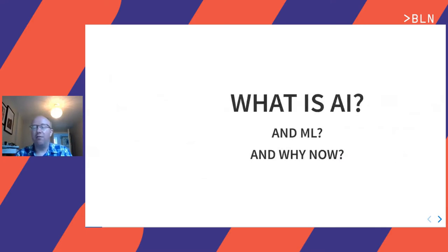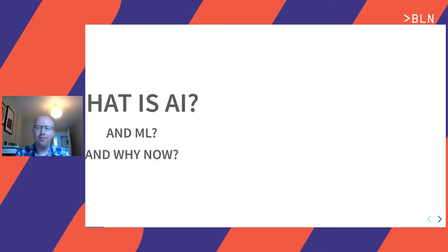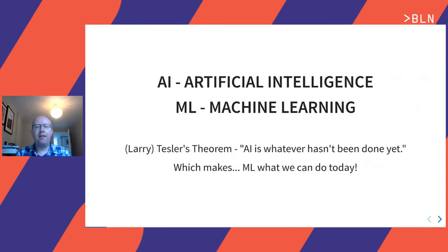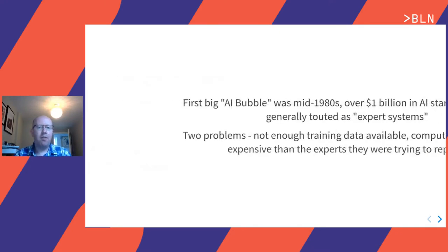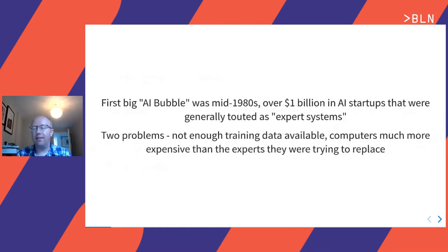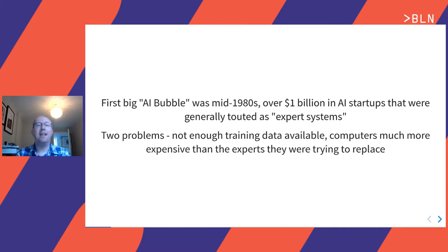What is AI and ML and why is it a buzzword? Larry Tesla's theorem: AI is whatever hasn't been done yet, which makes ML — machine learning — what we can do today. The first big AI bubble was in the mid-1980s. There was over a billion US dollars spent on AI startups. Generally they were called expert systems, and it was a bubble and it popped. There were two big problems: not enough training data available, and the computers were much more expensive than the experts they were trying to replace. Lots of money spent, it went pop.